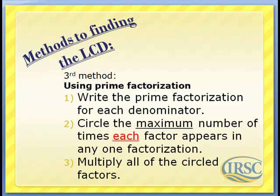Now the third method uses prime factorization. Here are the rules: write the prime factorization for each denominator, circle the maximum number of times each factor appears in any one factorization, and then multiply all of the circled factors.